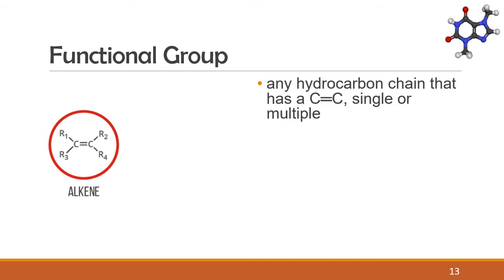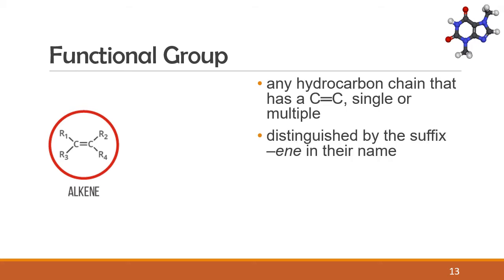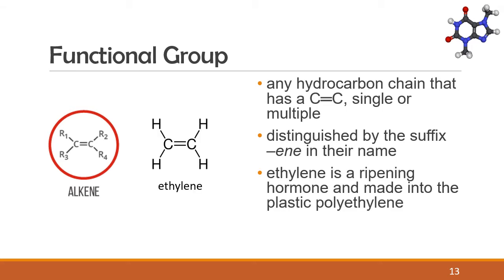Next, we have alkene. An alkene is any hydrocarbon chain that has a carbon double bonded to carbon. This could be just one C=C or two or more C=C bonds. Alkenes are distinguished by the suffix "-ene" in their name. Ethylene is a ripening hormone found in fruits but is also made into the plastic polyethylene. Neoprene is a synthetic rubber used to make medical gloves.